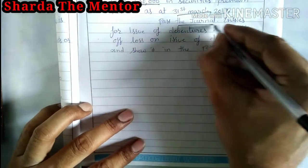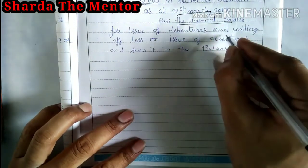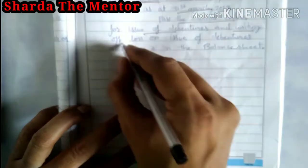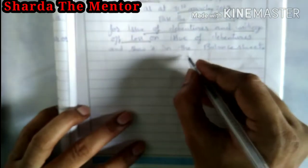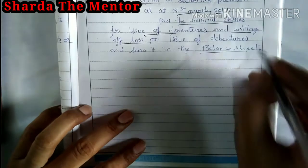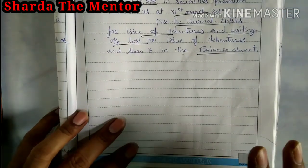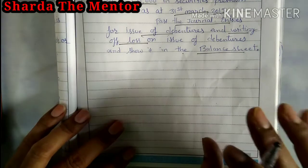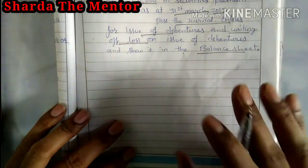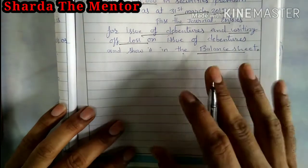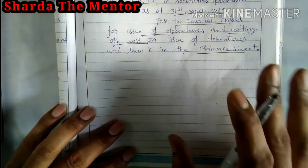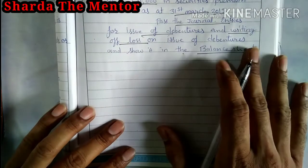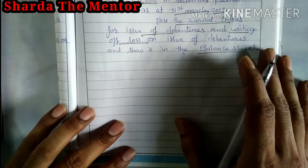What you have to do: first, you have to pass the general entry for issue of debentures, and the issue entry will also appear in the balance sheet as of 31st March. So in this question, you have to pass the issue of debenture entry and the writing-off entry, and show it in the balance sheet.